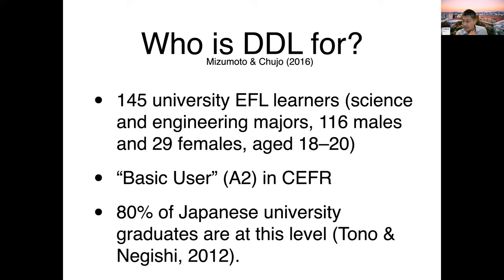The participants were 145 university EFL learners, science and engineering majors — 116 males and 29 females aged 18 to 20 — from a private university in Japan. The average proficiency was B2 in the CEFR, as approximately 80% of Japanese university graduates are at this level. These participants were considered an appropriate target population sample of Japanese EFL university students.